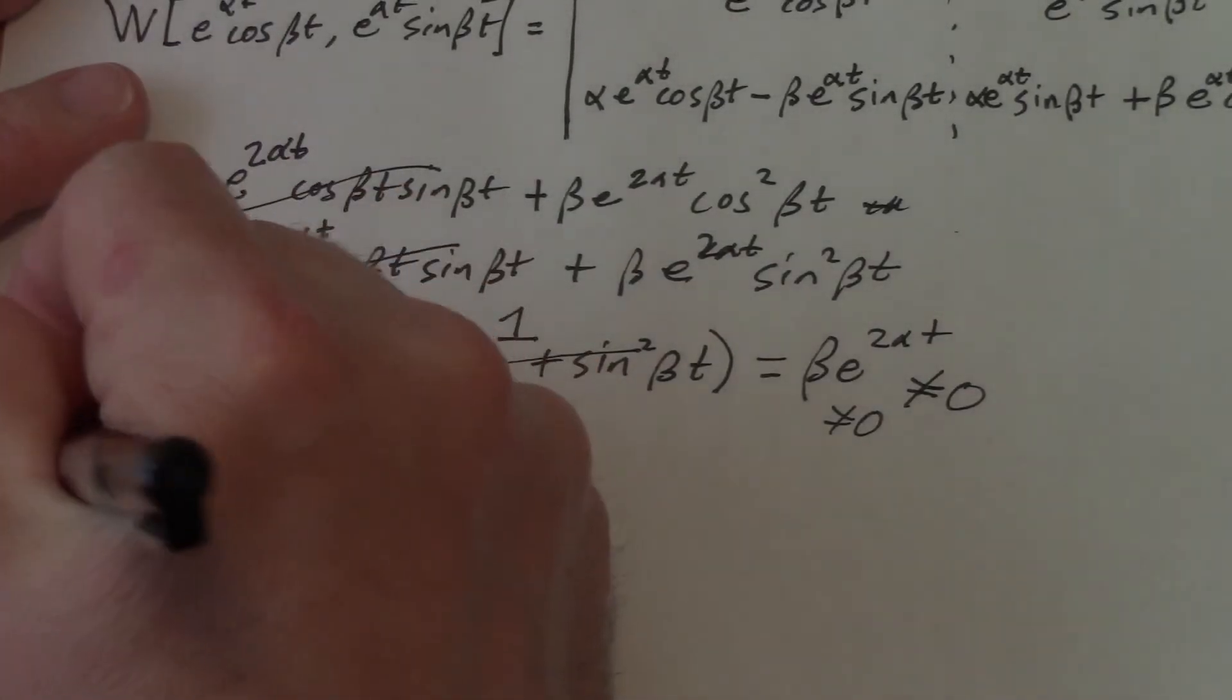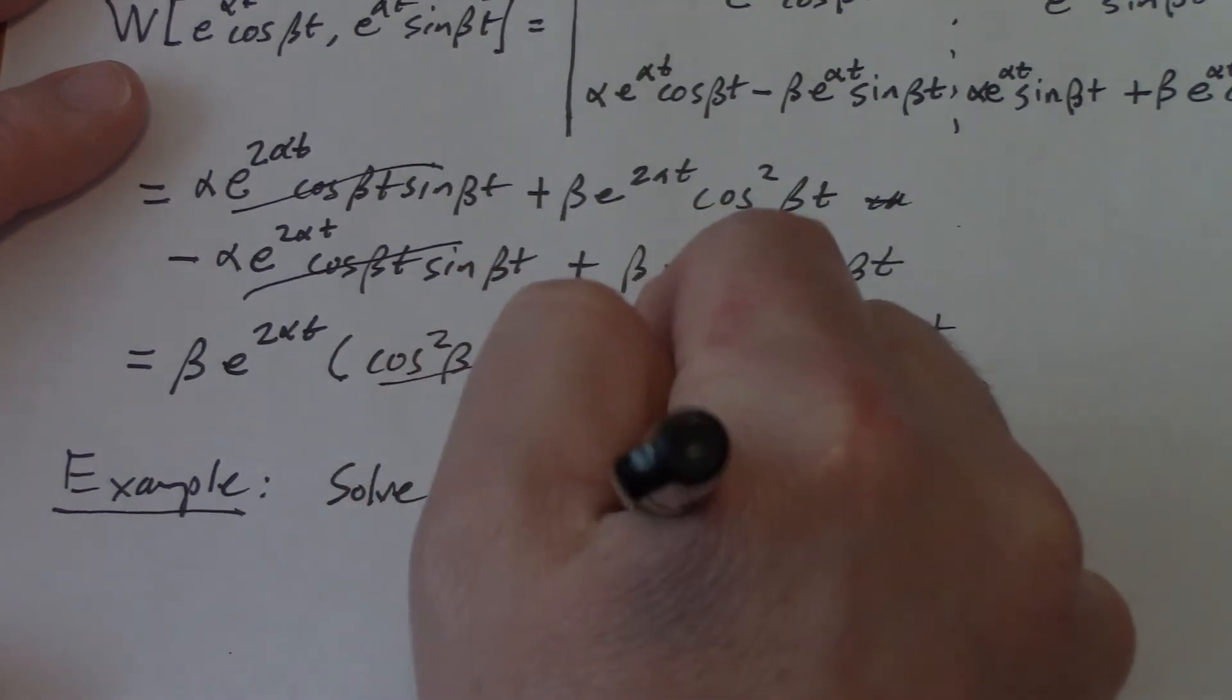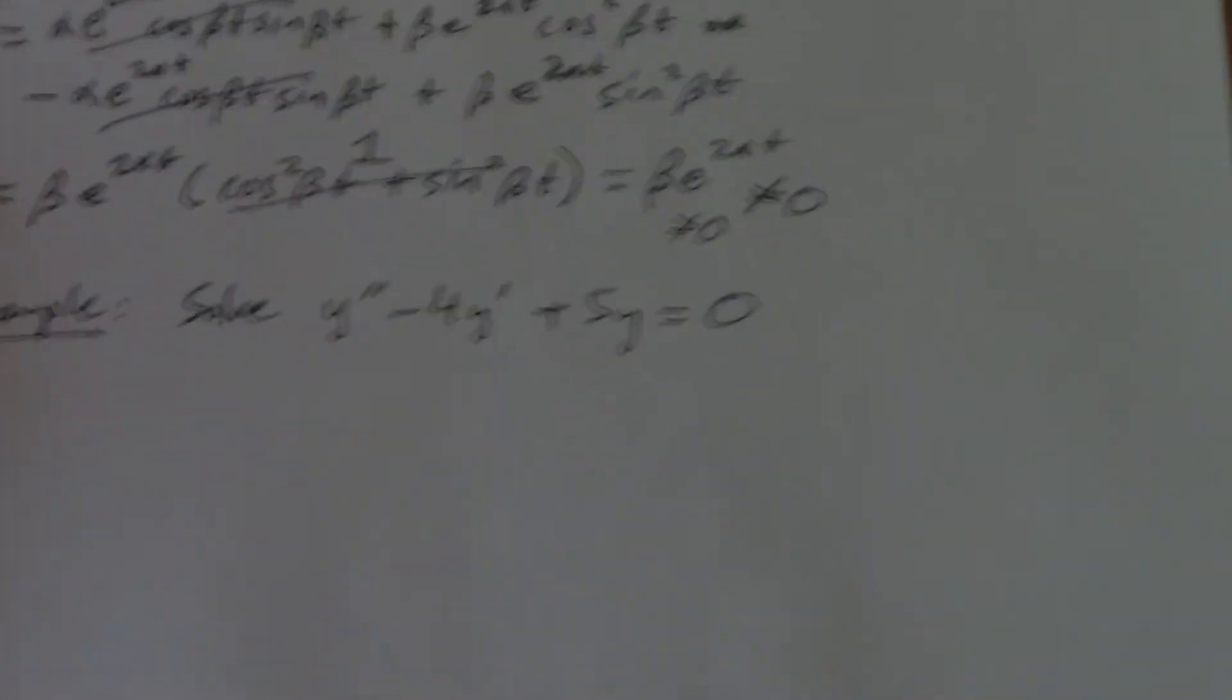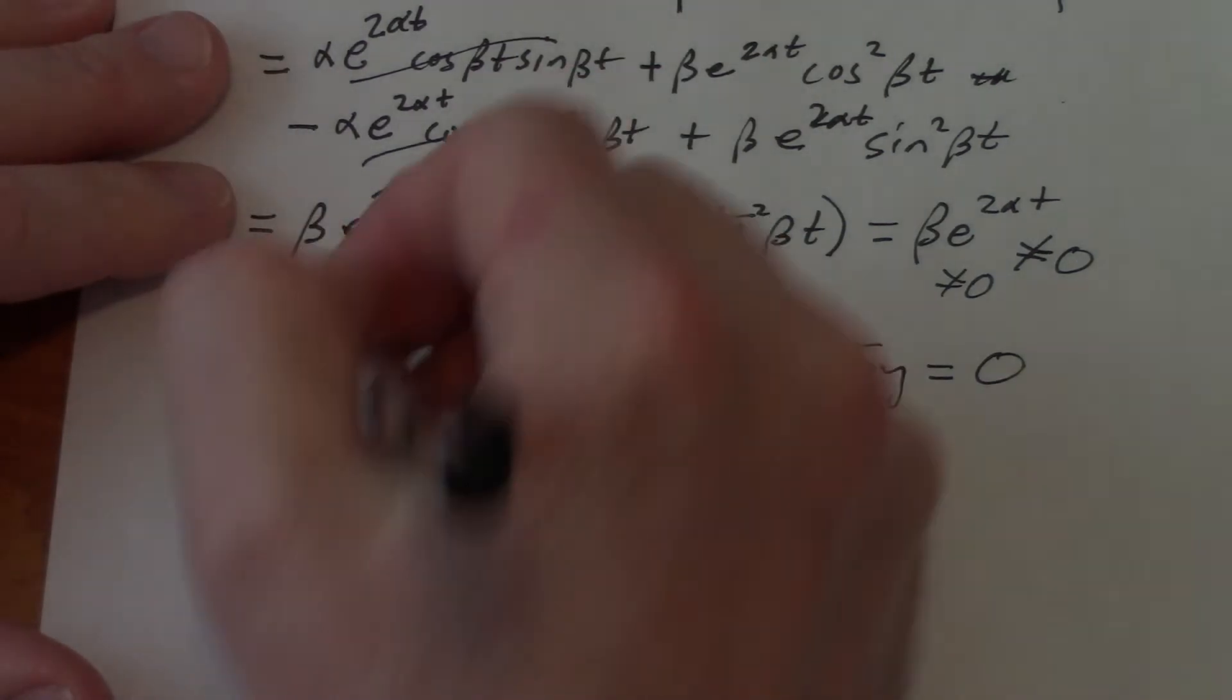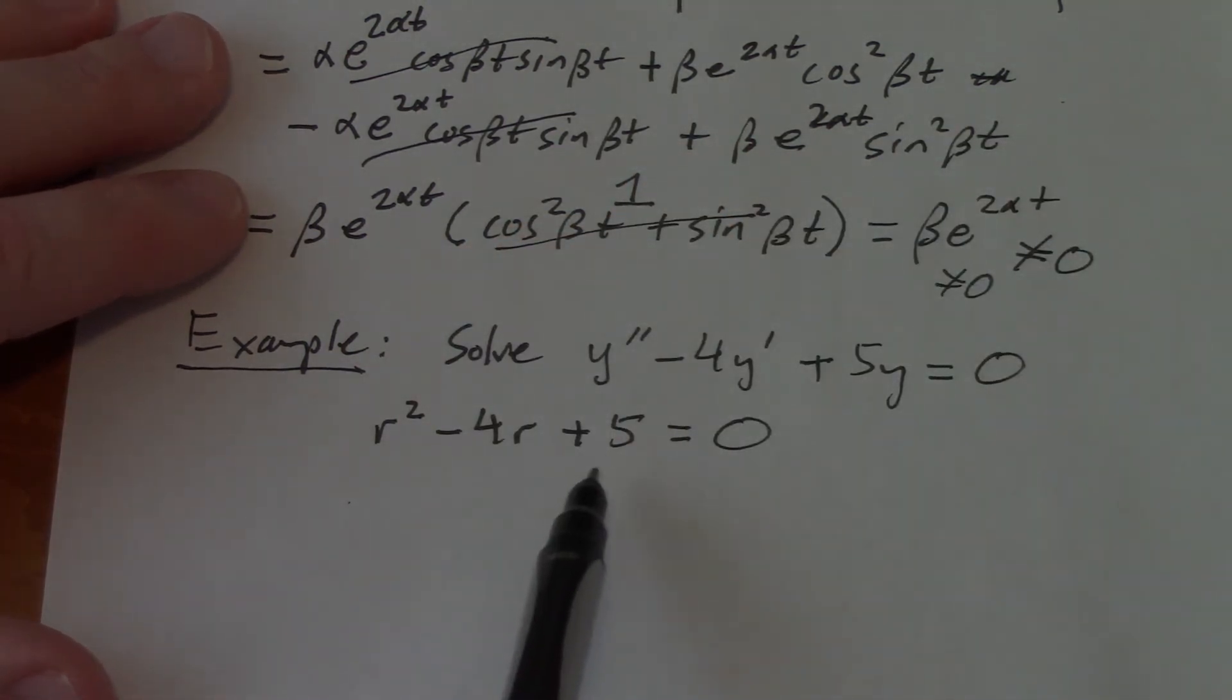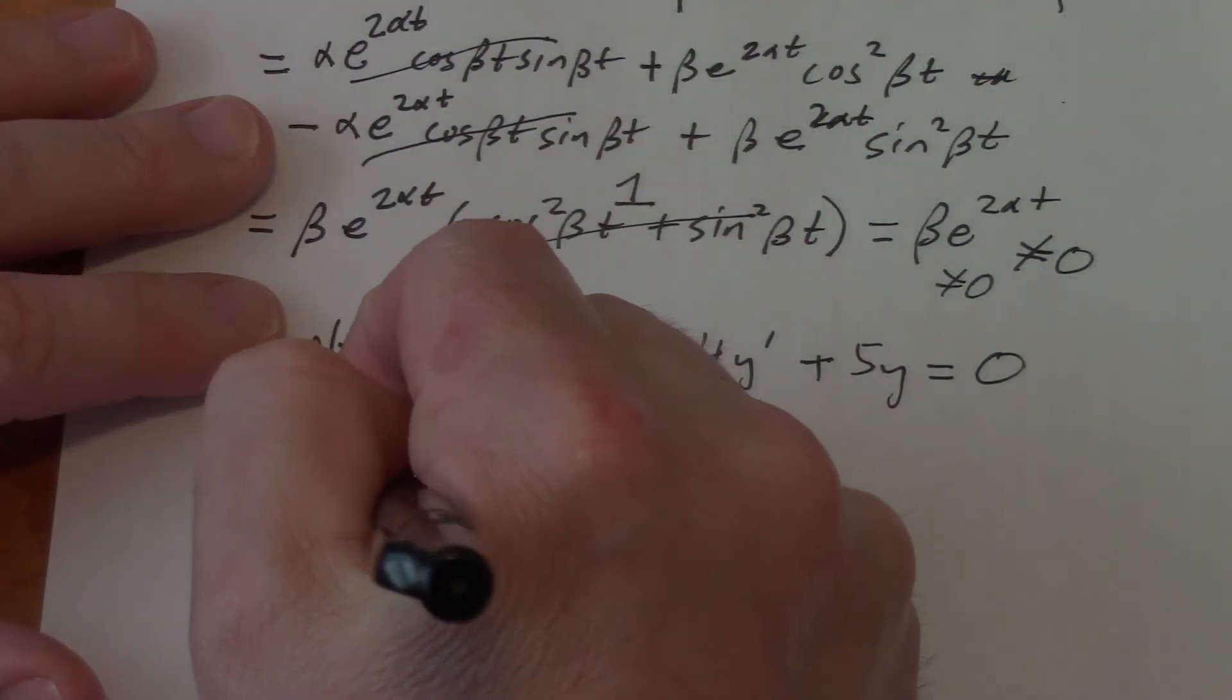An example. Solve y double prime minus 4y prime plus 5y equals 0. Got to love those Gaussian integers. What's the deal here? We need the characteristic equation. So r squared minus 4r plus 5 equal to 0. Just be careful with these, because sometimes people get these factoring when they don't. Factors of 5 that add up to 4, that's not happening. 1 and 5 are the factors of 5 that add up to 6.